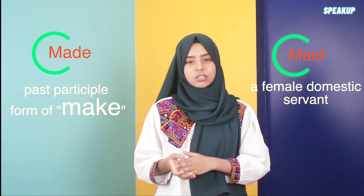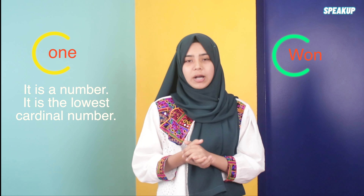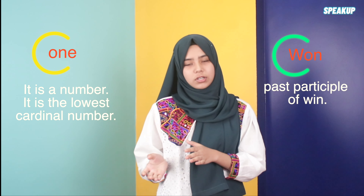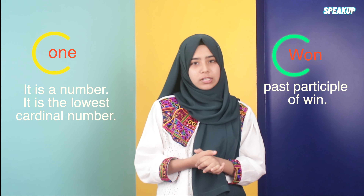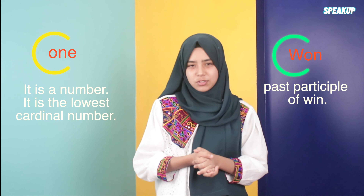Our next word is 'one.' There are two of them. First is O-N-E, 'one,' which is a number — the lowest cardinal number. The other is W-O-N, 'won,' which is the past and past participle form of 'win.' There are two pronunciations: 'one' and 'won,' but here I chose 'one' since I'm talking about homophones and it fits with them.